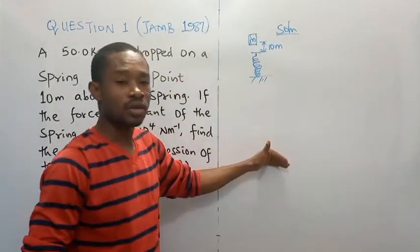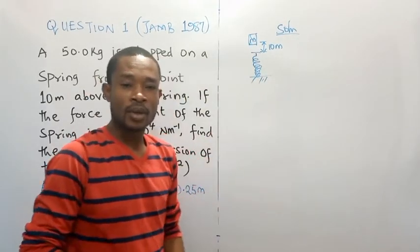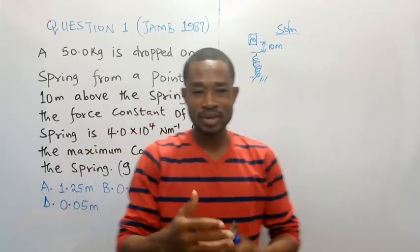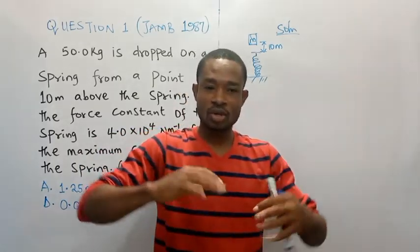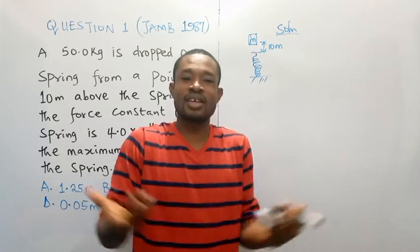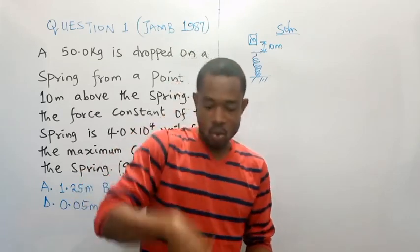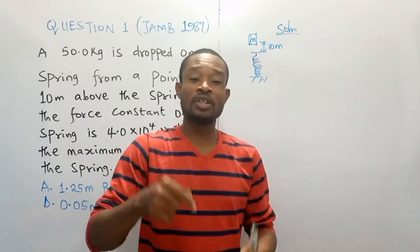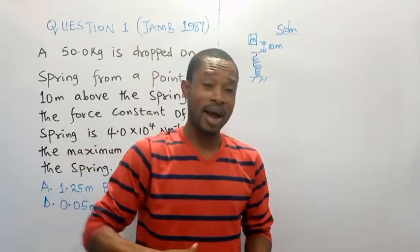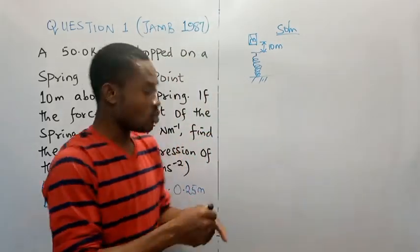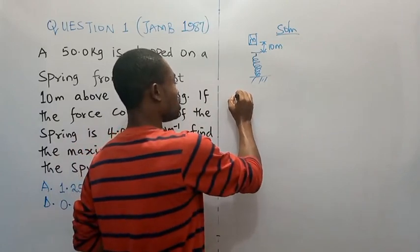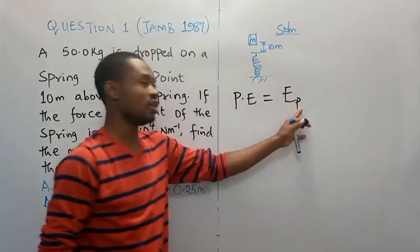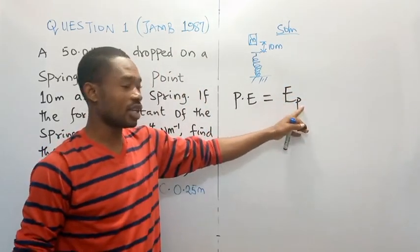When you release this mass and it falls on the spring, what is going to happen is it will bounce the spring. So, it's going to cause the spring to exact a certain energy. Work will be done on the spring. And, at the same time, the spring will do work on the mass because the spring can bounce the mass upward. So, for that reason, we can conclude that the potential energy is equal to the elastic potential energy. Permit me to use E subscript P as elastic potential energy.